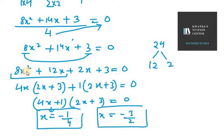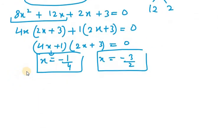These are the two zeros we have, that is x equals minus 1 over 4 and x equals minus 3 over 2. Now, the first one is alpha and the second one is beta.